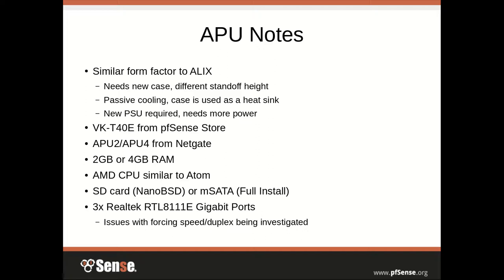It has three Realtek NICs, which are not the greatest but still pretty good for most deployments. Intel will be better, and down the road we'll have equipment with Intel NICs available. The main issue with the Realtek NICs is you can't force the speed and duplex. If you're connected to equipment like a fiber converter or a cable modem that's forced to 100 meg full, it may not work. You may need to drop a managed switch in there and hard-code the port toward your provider while leaving the port facing the APU on auto-negotiate. We're looking into a fix in the driver.